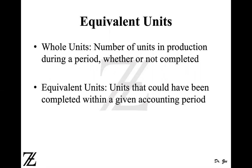What it means is, if you started working on 20,000 units and you completed only 15,000 units out of 20,000 during the period, your whole or physical units would be all 20,000 units, because those include the units that you have completed, plus the units in your ending work in process, whether or not completed.